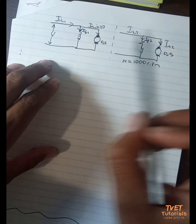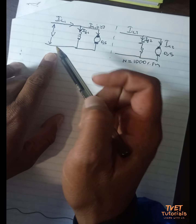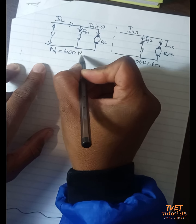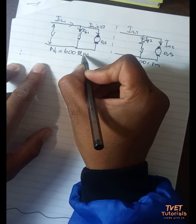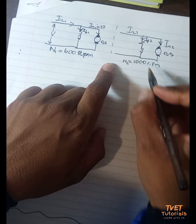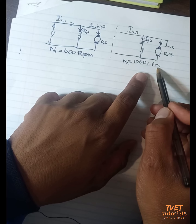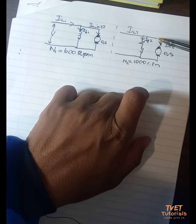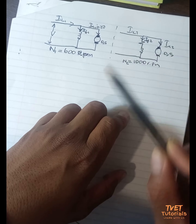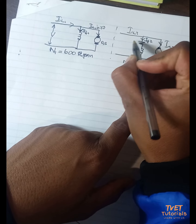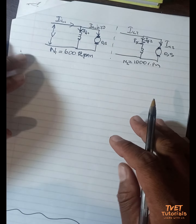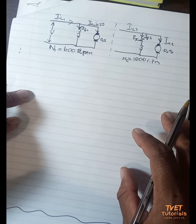Looking at this, we have two scenarios: condition one where speed n1 equals 600 RPM, and then the speed is changed to n2 equals 1000 RPM. To achieve that change, a resistor was inserted in series with the field of this shunt setup. We need to calculate the value of this resistor — let's call it Rx.